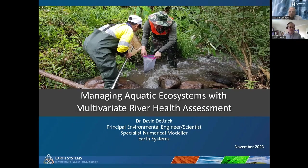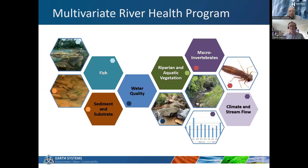Aquatic ecosystems are very interesting on planet Earth because they're probably the most biodiverse habitats on the planet. They're also the smallest in area and generally the most impacted because all people need water everywhere around the world. This graphic tries to outline the various major subjects in a classic multivariate river health program.